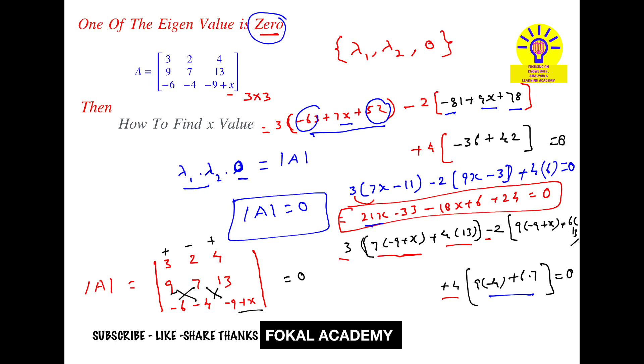Now add here 21x and minus 18x, nothing but 3x. Minus, so here we get minus, that is minus 33 plus 6 plus 24, so 24 plus 6 is 30, so minus 33 plus 30 nothing but minus 3. That's equal to 0. So from this x we get 3 by 3, nothing but x equal to 1.